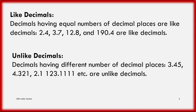Because decimals having equal numbers are like decimals. Now I will make it more clear. In 2.4, after the decimal place there is only one digit. Similarly in 3.7, after the decimal there is also only one digit. And after 12.8, also only one digit. And after 190.4, also only one digit. So they are like decimals — they are all in the tenth place. So they all are like decimals because they each have a single decimal digit.